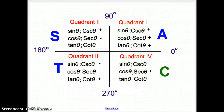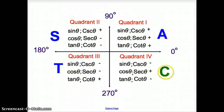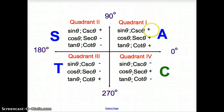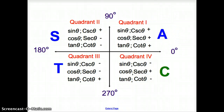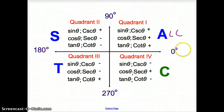You also need to know CAST. We spell CAST — C-A-S-T — starting in the fourth quadrant. What that describes is what's positive and negative. In quadrant one, where we have the A, A stands for all — all trig functions are positive. So sine, cosine, and tangent are all positive.